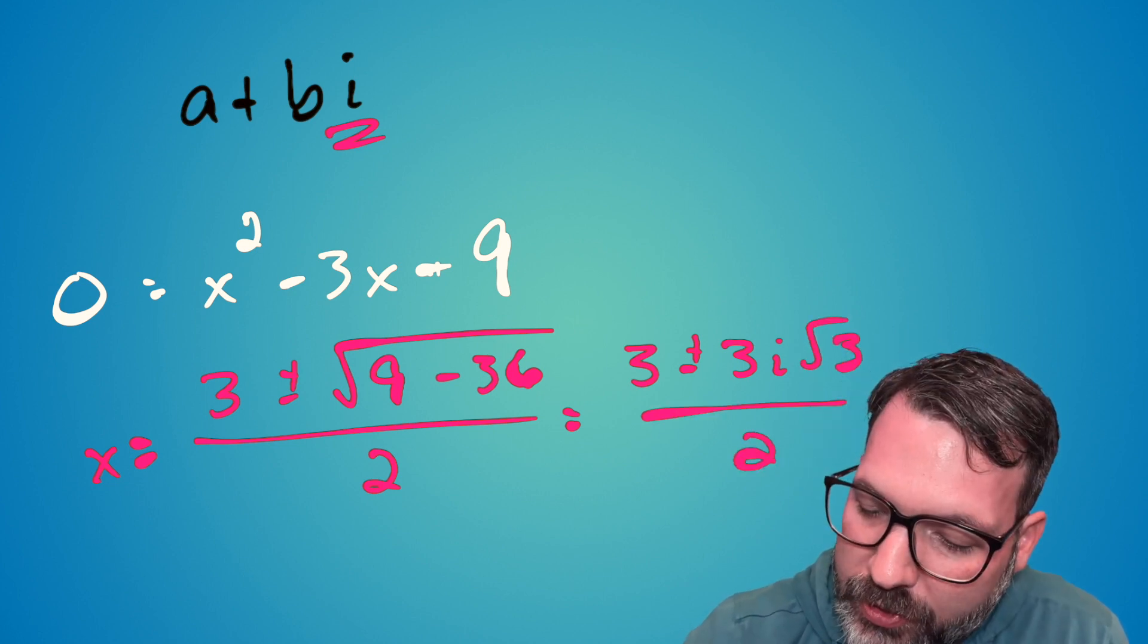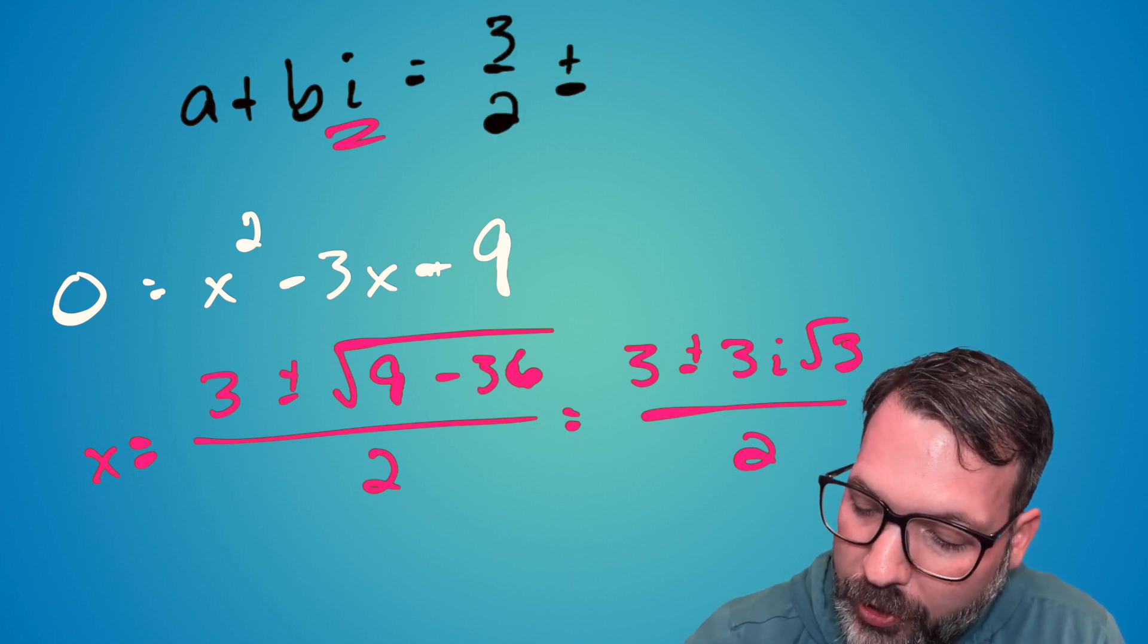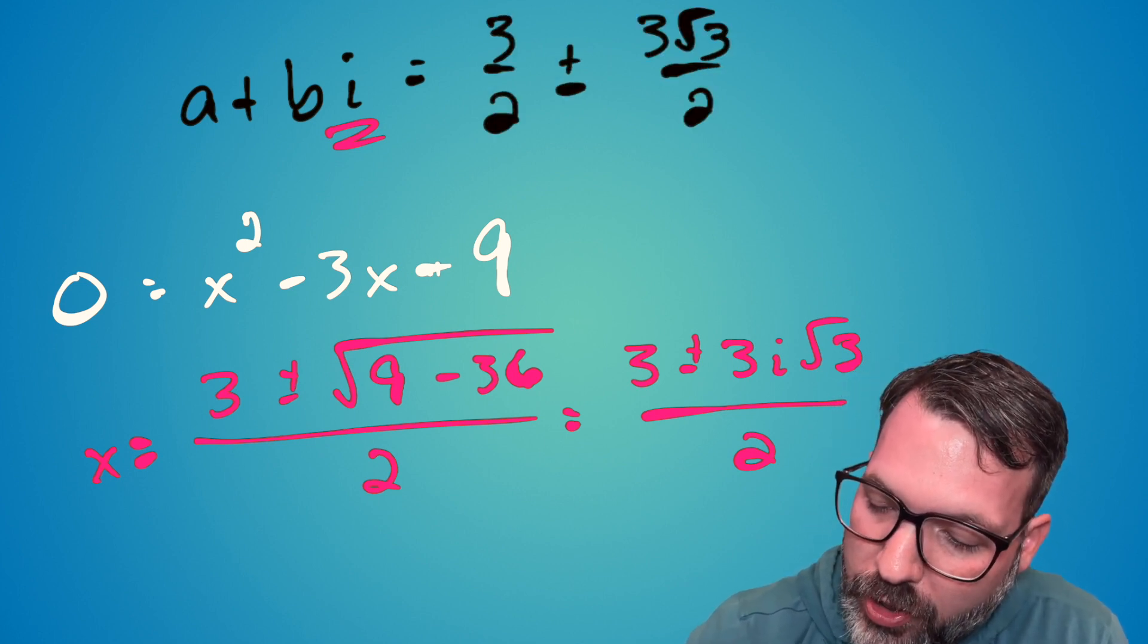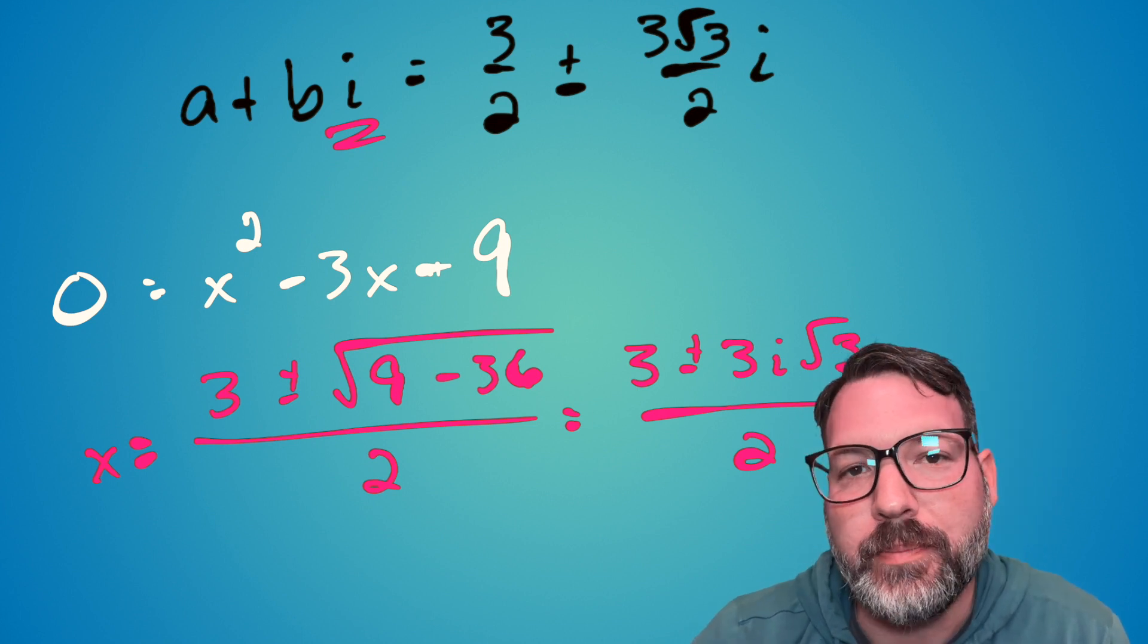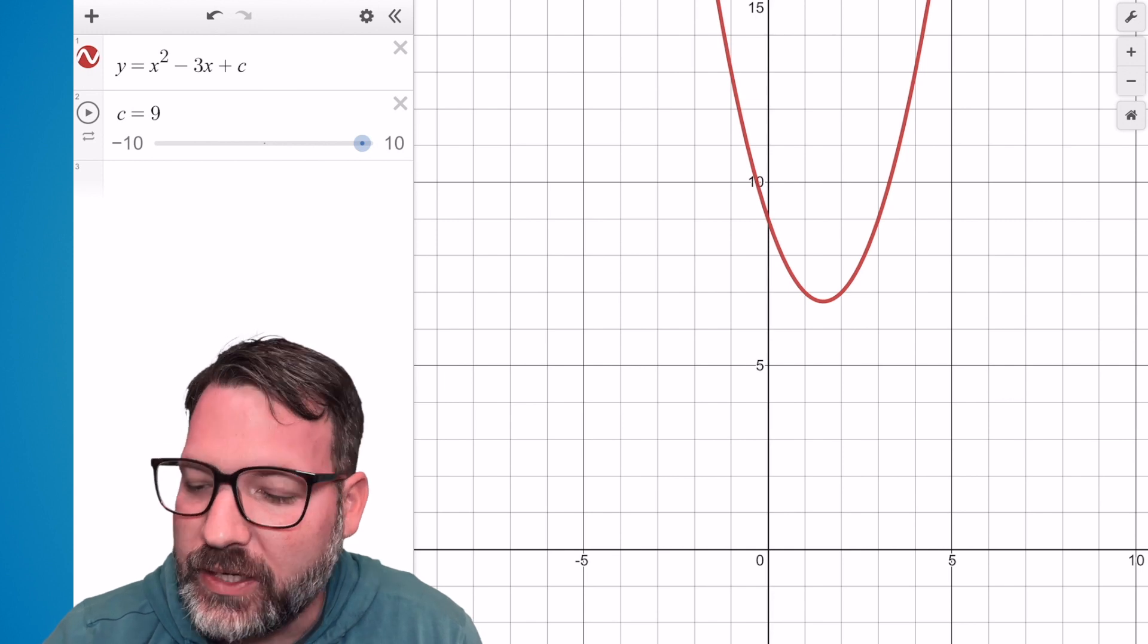Which eventually simplifies down to 3 plus or minus 3i root 3 over 2. Or if we put it in terms of these complex numbers, 3 over 2 would be the real part, and then 3 root 3 over 2i would be the imaginary part. If we take a look at the graph of that quadratic, we can see why it didn't have real solutions.